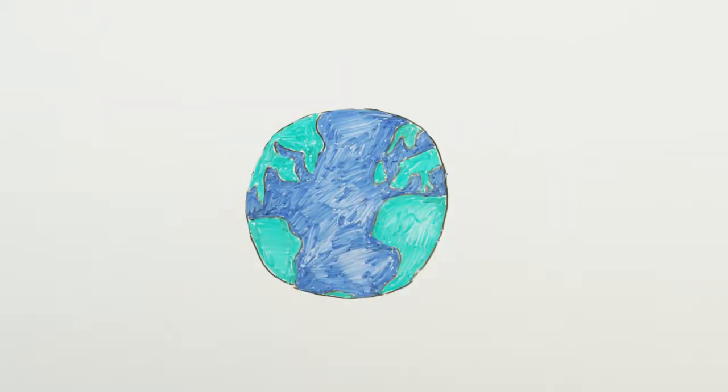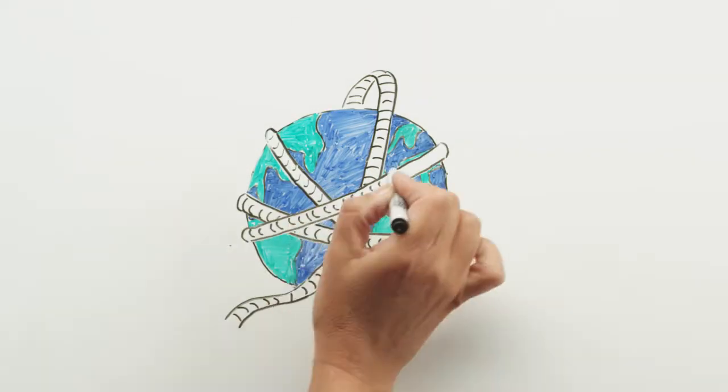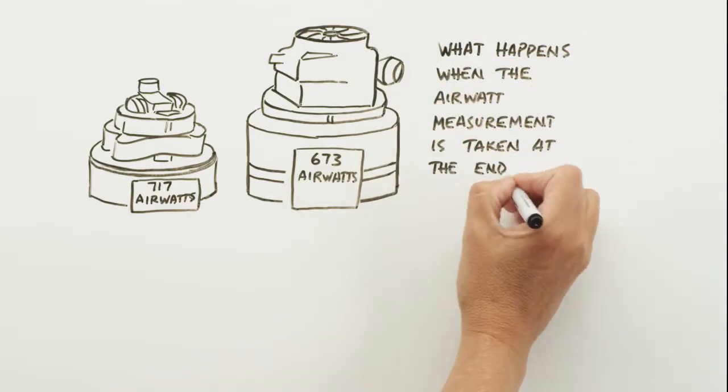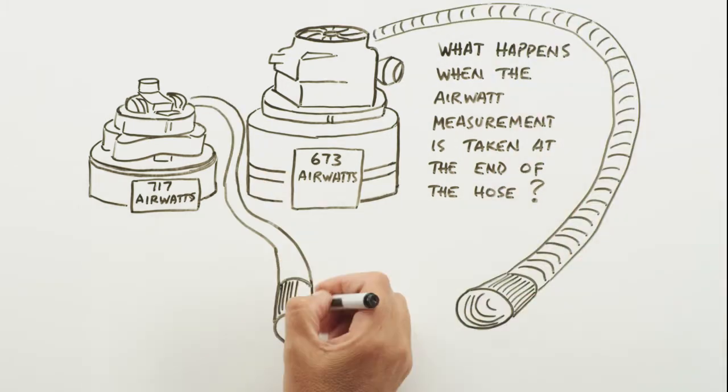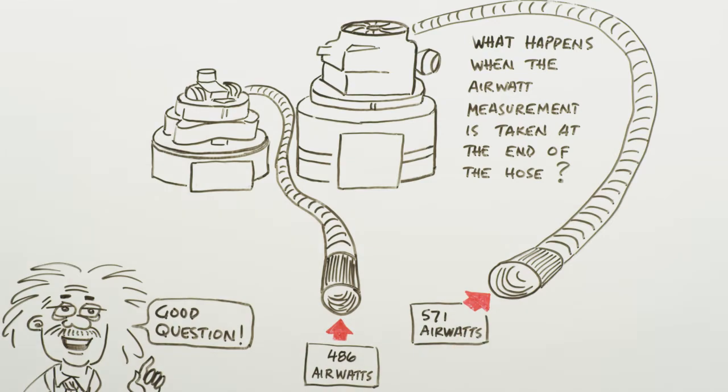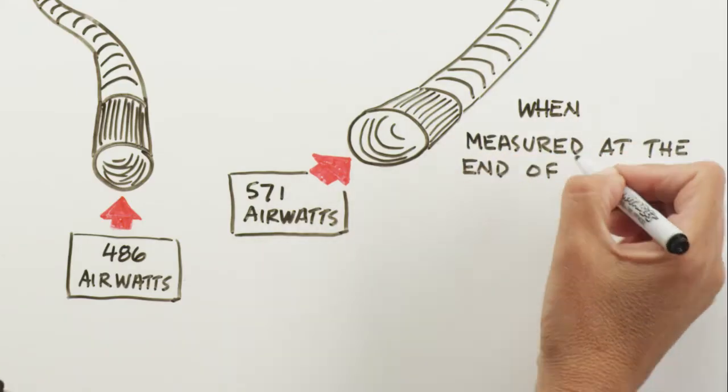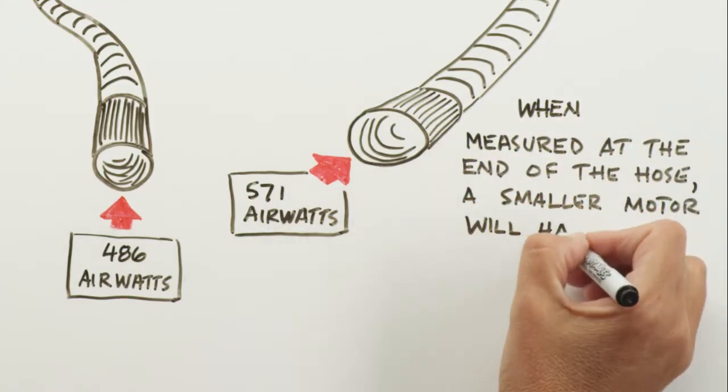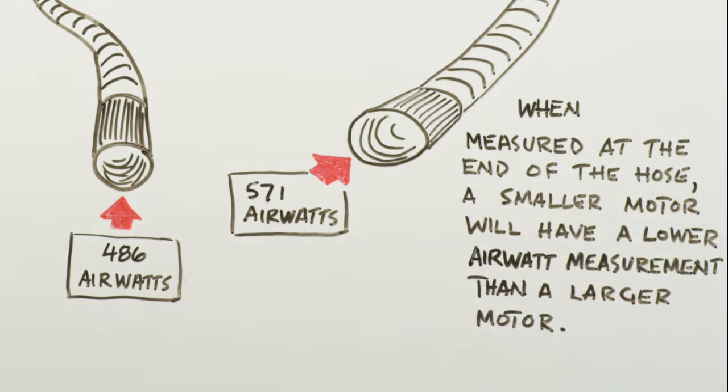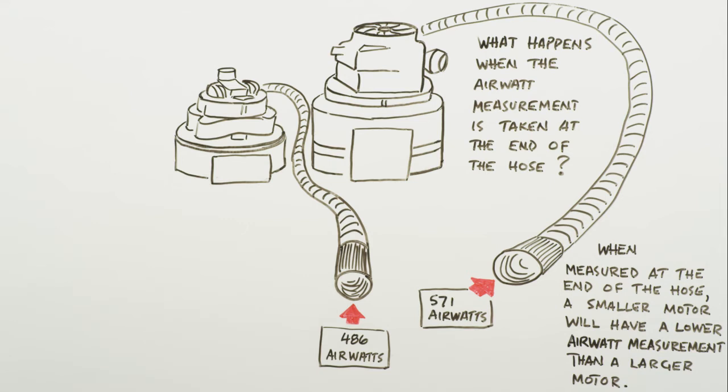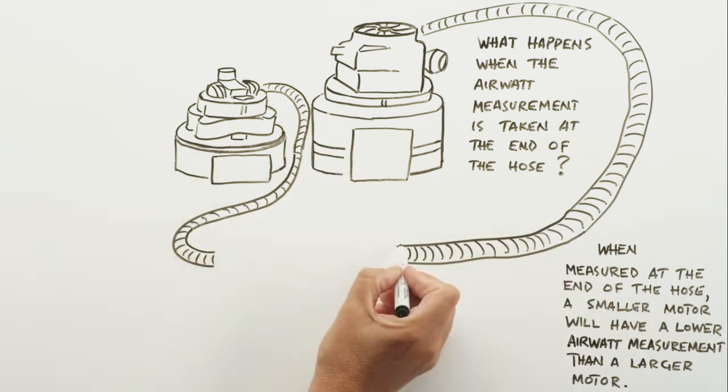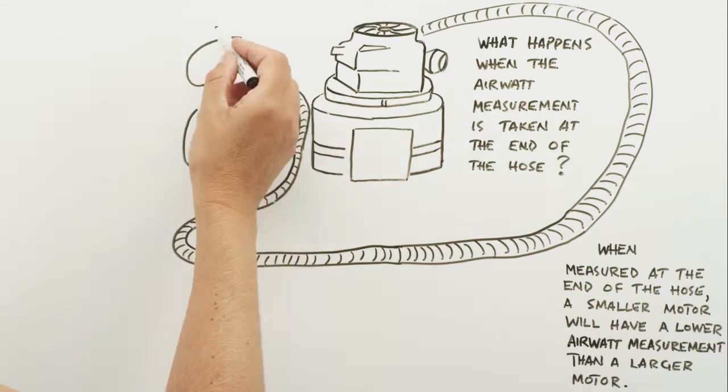Obviously, the length of the hose will impact the vacuum's performance. What happens when the airwatt measurement is taken at the end of the hose? Good question! When measured at the end of the hose, a smaller motor with less suction will have a lower airwatt measurement than a larger motor with more suction. So you see, brochure airwatt are not a very good way to evaluate the best performance or value of a vacuum system.